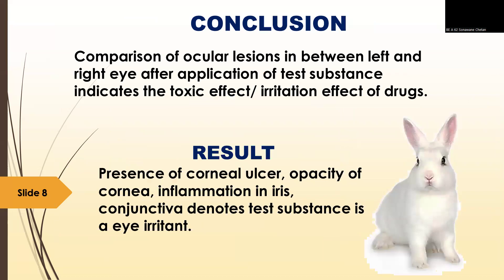Conclusion: after comparison of the ocular lesions between the left eye and right eye following application of the test substance, the results indicate the toxic effect of the drug. Results: the presence of corneal ulcer, opacity of the cornea, inflammation of the iris, and conjunctivitis denotes that the test substance is an eye irritant.